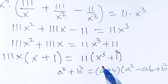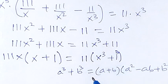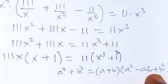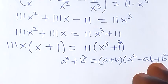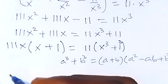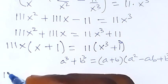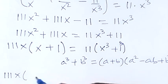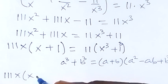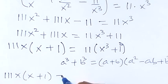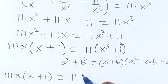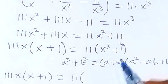With x as a and 1 as b, the left-hand side becomes 11x times (x + 1), and this equals 11 multiplied by the expanded form of x³ + 1³.